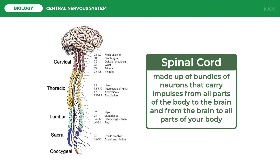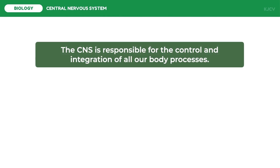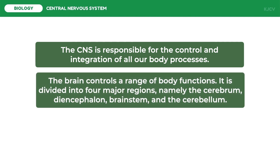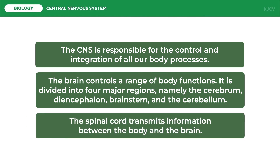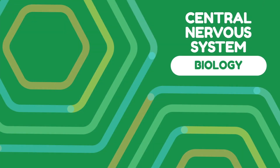To conclude, the CNS is responsible for the control and integration of all our body processes. The brain controls a range of body functions and is divided into four major regions: the cerebrum, diencephalon, brainstem, and cerebellum. The spinal cord transmits information between the body and the brain. That ends our discussion on the central nervous system.